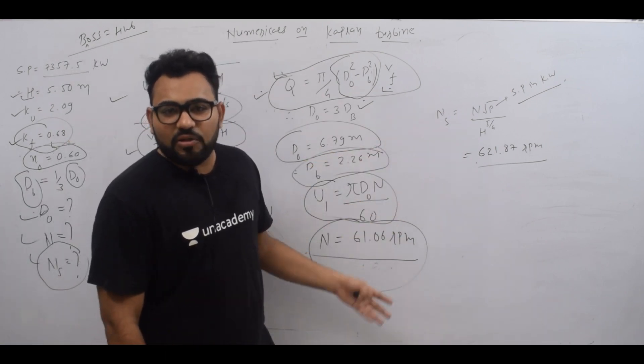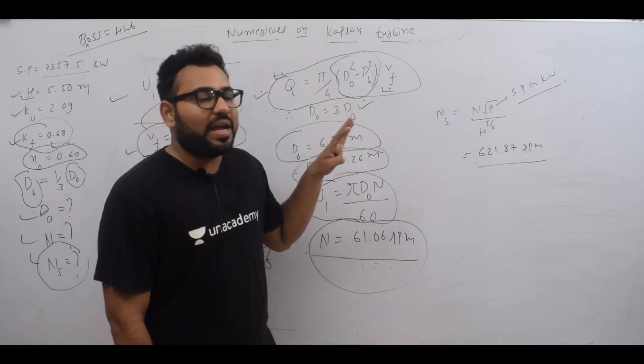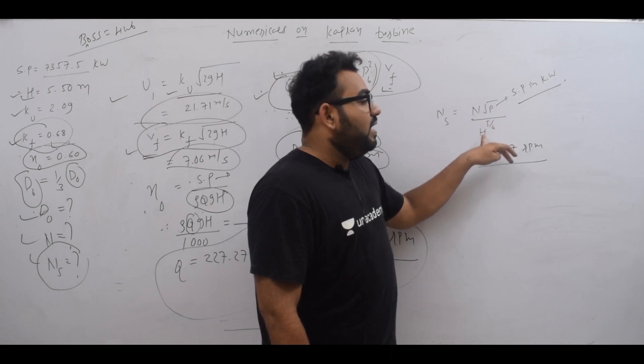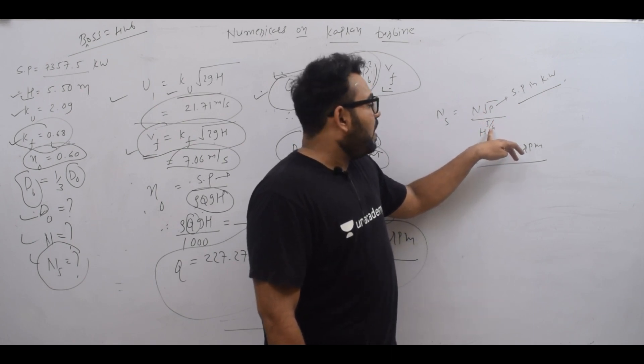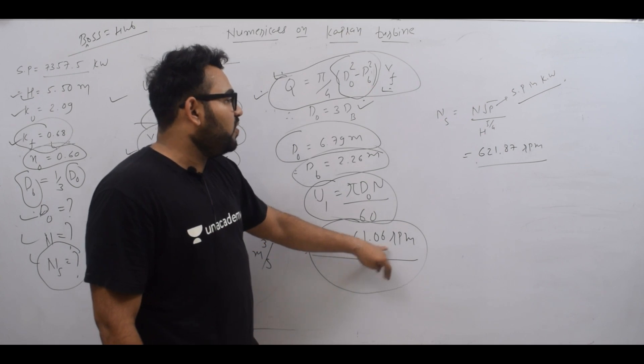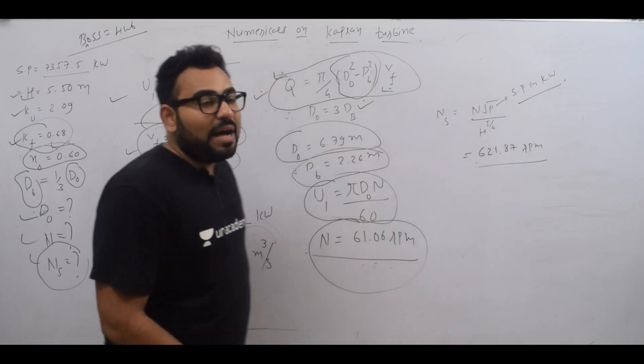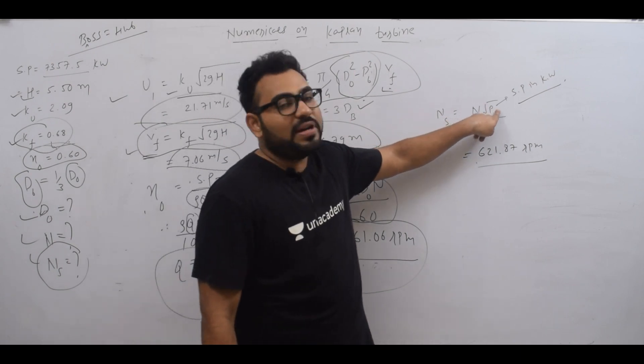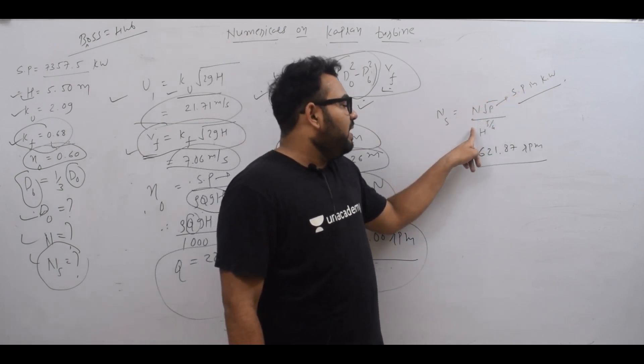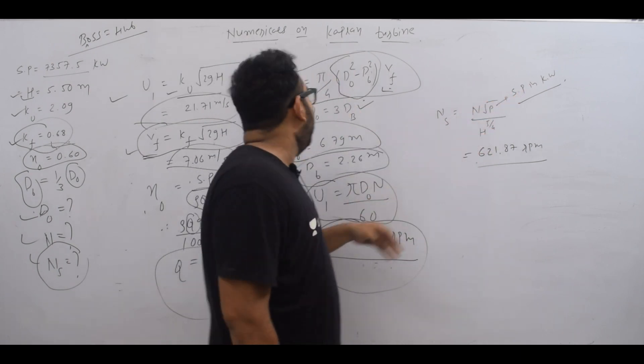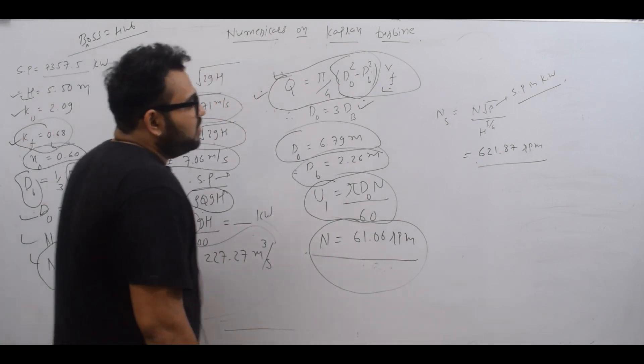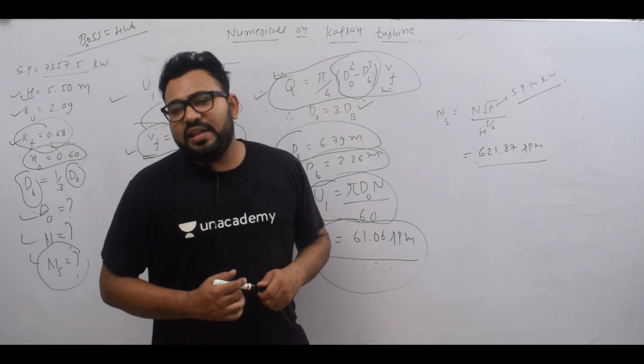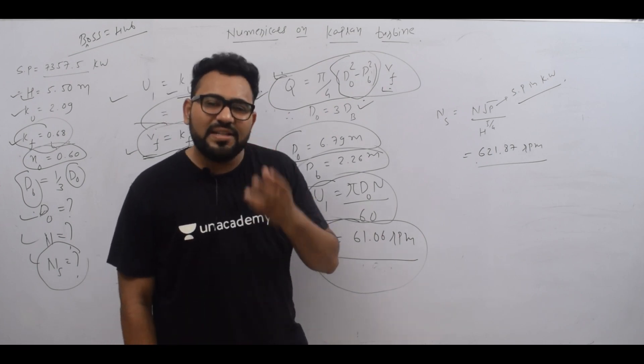For specific speed, the equation is Ns equals N times square root of P divided by H to the power 5/4, where N is speed in RPM (61.06), P is shaft power in kilowatts, and head H is 5.50 meters. Calculating this gives the specific speed value in RPM.